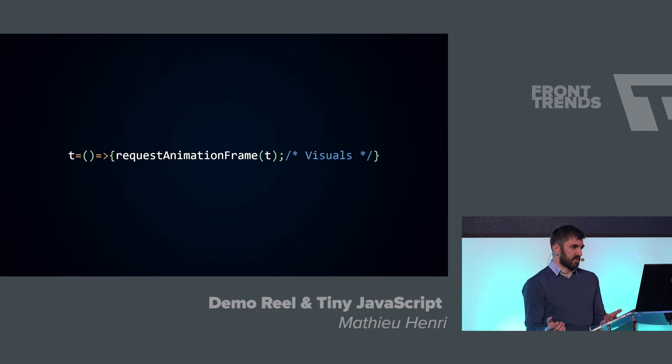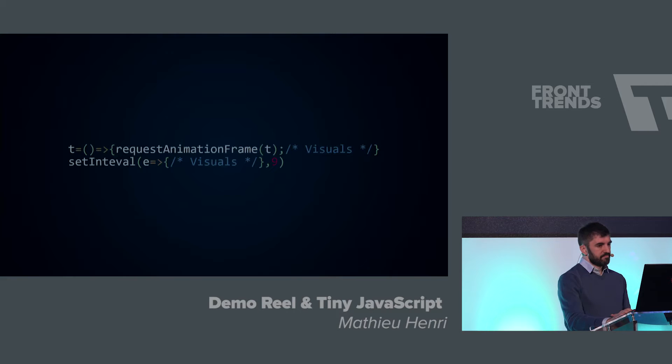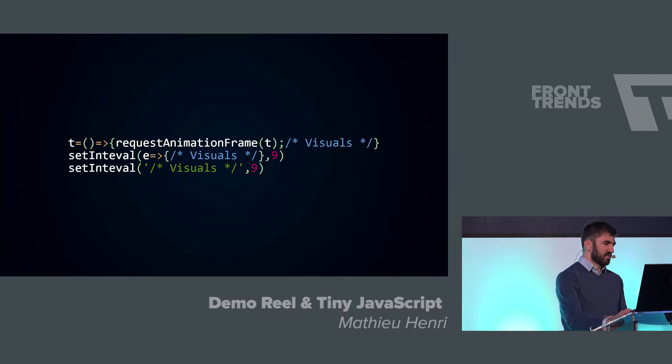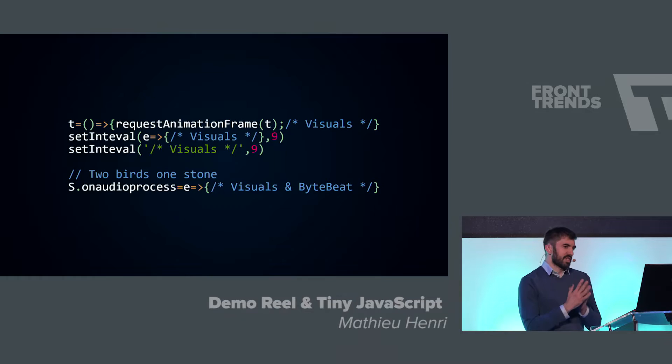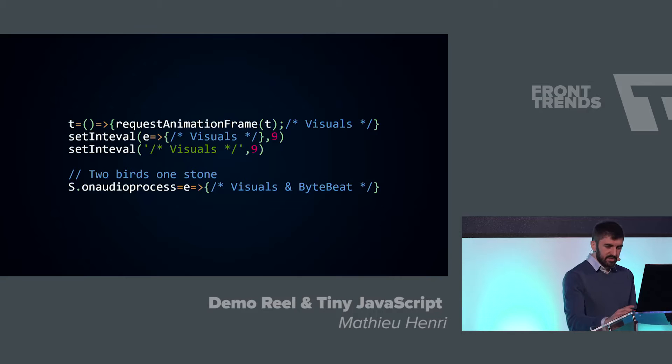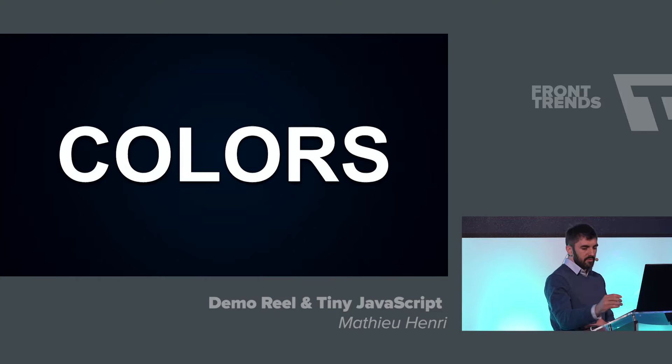You will need a render loop for your animation. If you're a good citizen, you use requestAnimationFrame with a tick function. If you're bad, you use setInterval. If you're worse, you use setInterval with a string. But if you're really naughty and you're doing sound with the Web Audio API, you can hit two birds with one stone: in the audioprocess event you can do both the sound generation and the visuals, saving some bytes.